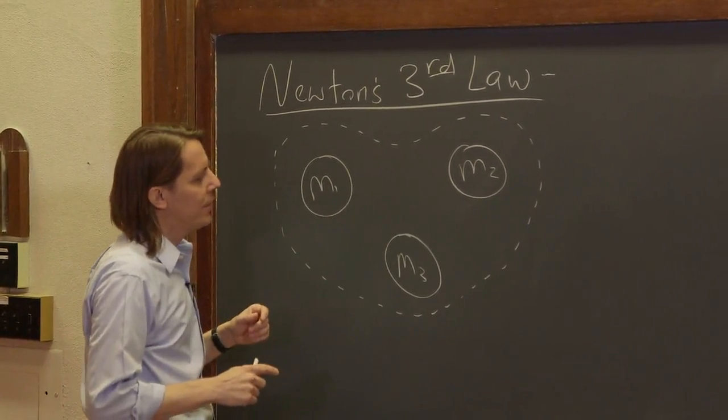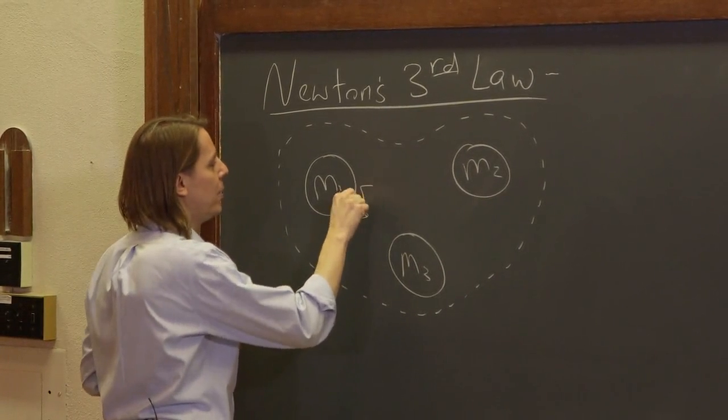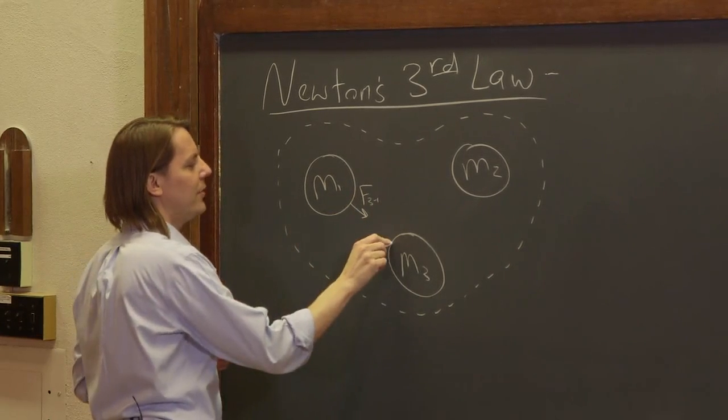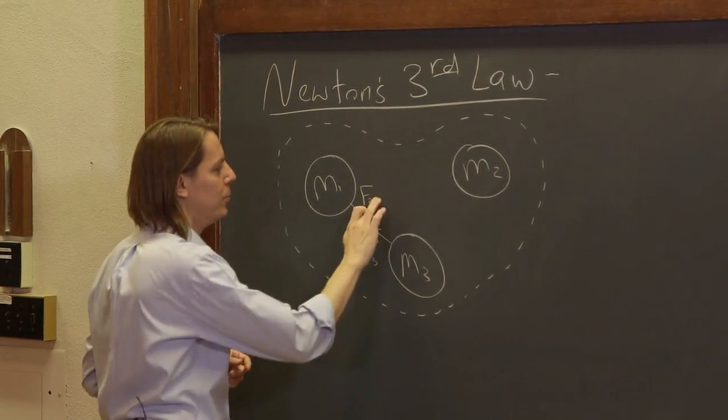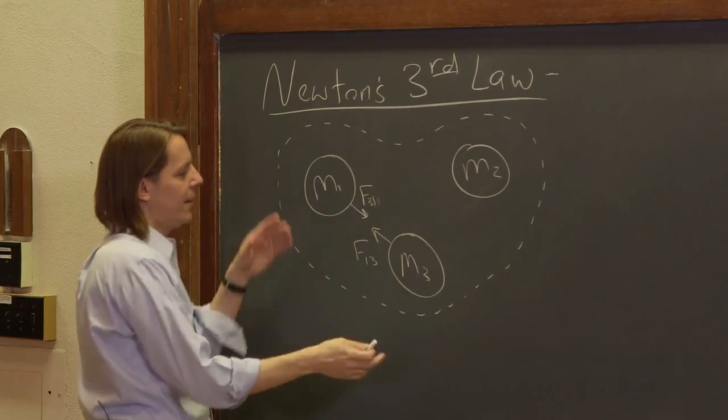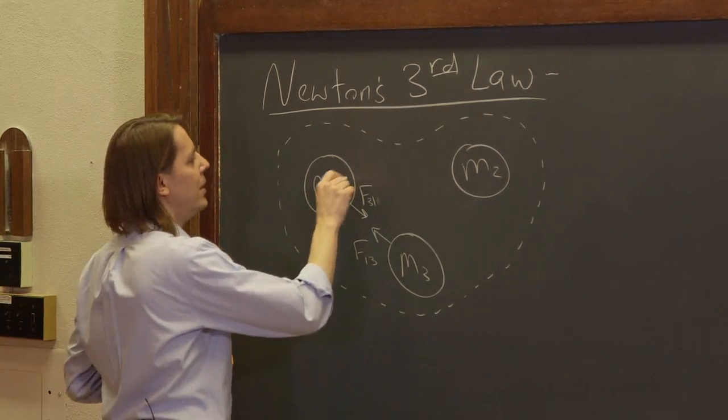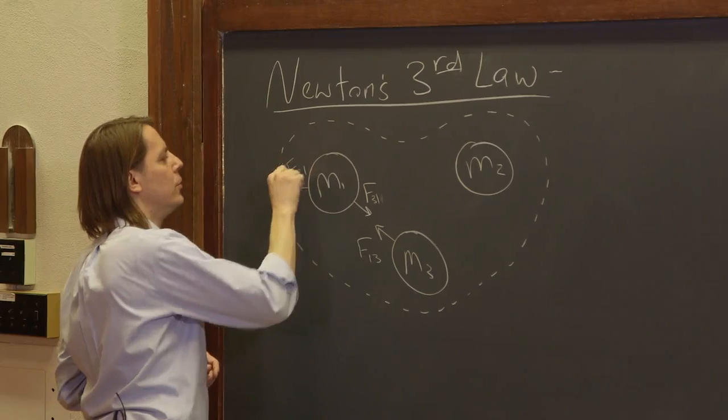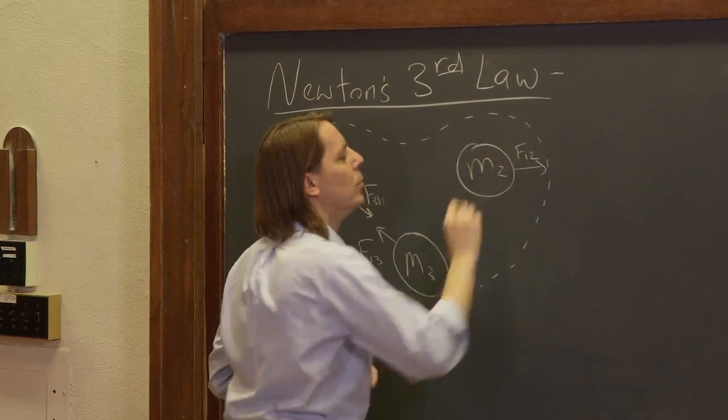Let's just draw some forces. M1 and M3 interact. And due to Newton's third law, if we call this F31, that means the force of three acting on one has to be equal to F13. That's what Newton's third law says, that for every action, there's an equal and opposite reaction. Let's see. M1 and M2 might be repelling each other. This might be the force F21. Therefore, this would have to be the force F12.